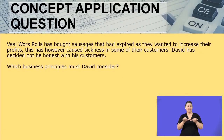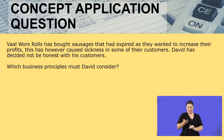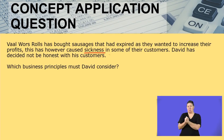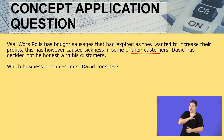It reads as follows: Val Vos Rose has bought sausages that had expired, as they wanted to increase their profits. So it's most likely that when buying these sausages, their price was down because they were expired. This has however caused sickness in some of the customers. Some sausages which had expired were bought, food was made and sold to customers, and those customers are now sick. But David has decided not to be honest with his customers.